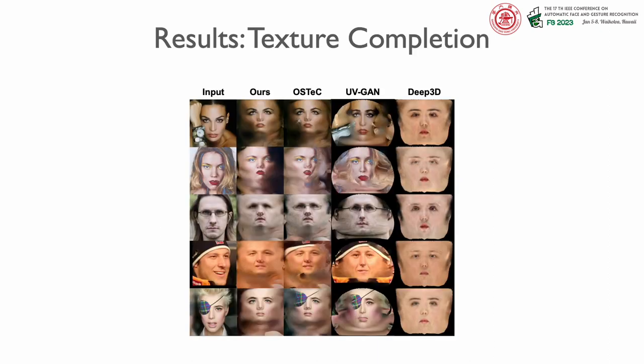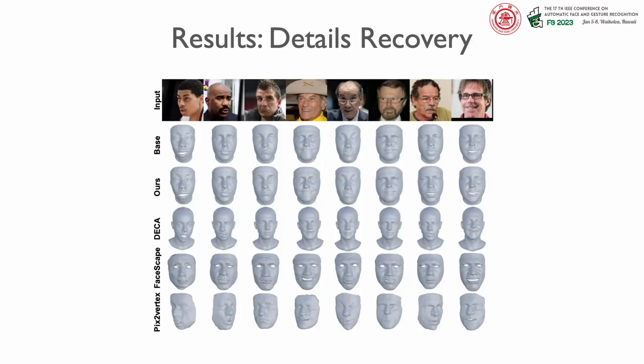We compare the full texture completion algorithm with recent state-of-the-art methods. As our approach includes a robust de-occlusion module, our results significantly outperform the texture completion results of counterparts. For the detail recovery part, we compare with recent single image reconstruction methods that reconstruct mesoscopic details such as wrinkles. Our reconstruction results produce accurate details, even in examples with significant contouring, wrinkles, or occlusions.